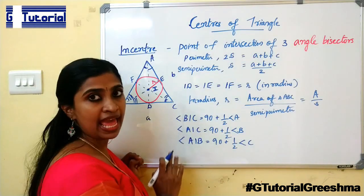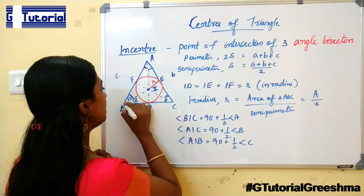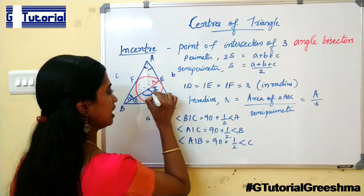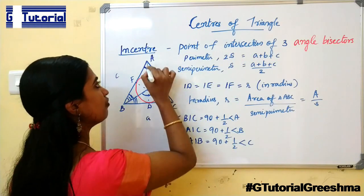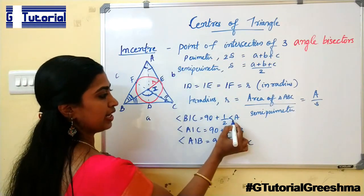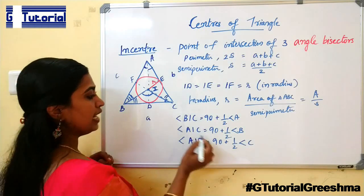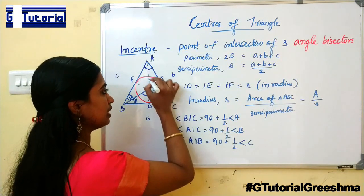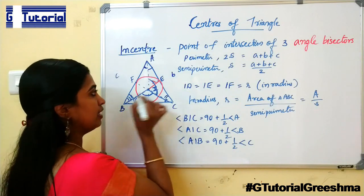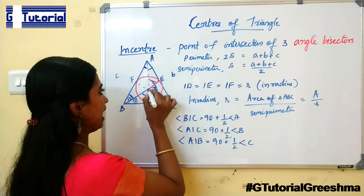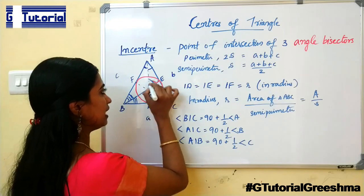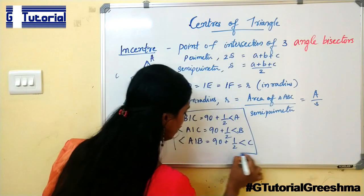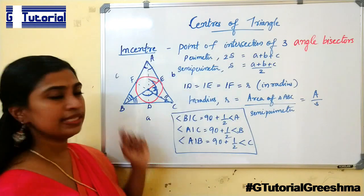Now let us study about some angles. The angle BIC is equal to 90 degrees plus half of angle A. Similarly, angle AIC is equal to 90 degrees plus half of angle B. And angle AIB is equal to 90 degrees plus half of angle C.